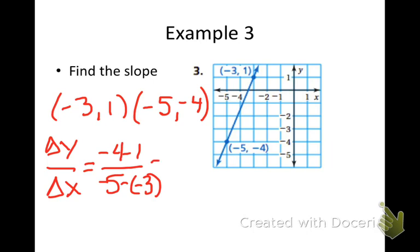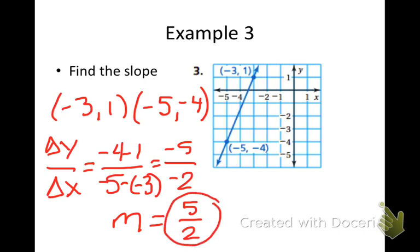Negative 4 minus 1 is a negative 5. Negative 5 minus a negative 3 is like negative 5 plus 3 or negative 2. Remember that a negative divided by a negative is a positive, so the negative signs go away. 5 over 2 becomes the slope. So remember that's calculating the change in y over the change in x.